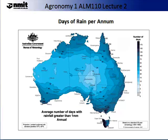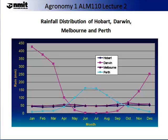The image on the slide, produced by the Bureau of Meteorology, demonstrates the days of rain per annum on average for Australia. As you can see, there are large variations ranging from no rain all the way through to 175 days of rain. The graph on your screen now illustrates the rainfall distribution across a year for four major cities: Hobart, Darwin, Melbourne and Perth. You will note that Melbourne and Hobart have reasonably steady rainfall throughout the year. Darwin in the far north has a lot of rainfall from November to March, followed by a very dry period from May to September, while Perth follows a different pattern again.